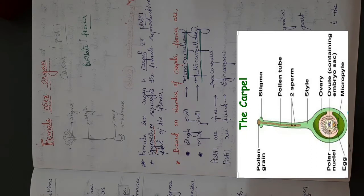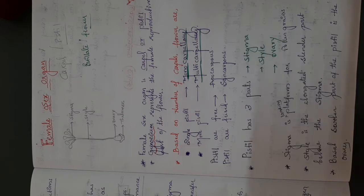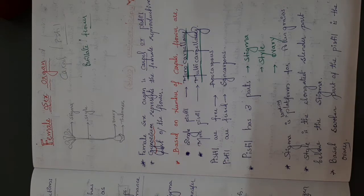If the pistils or carpels are more, we use the word multicarpellary. Multi means more carpels are present — two or three carpels. You can see pentacarpellary, tetracarpellary, tricarpellary. Commonly used words are multicarpellary and tricarpellary. These are the basic concepts of the female reproductive part.